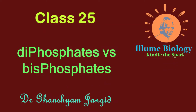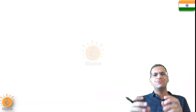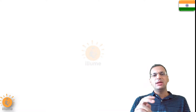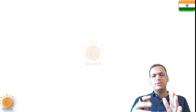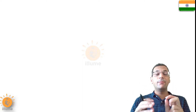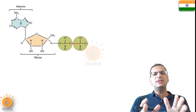Welcome back to Illium Biology. Today I am going to tell you the difference between bisphosphate and diphosphate. The word 'bis' means two and 'di' means two — that means in both of these molecules there are two phosphate groups present, but there is a slight difference between the two.